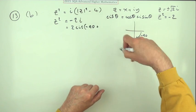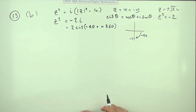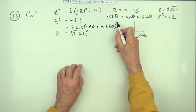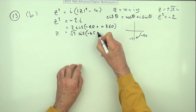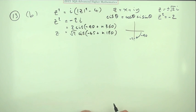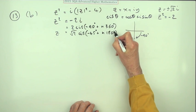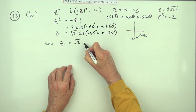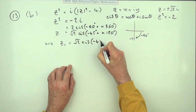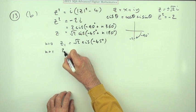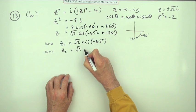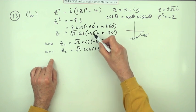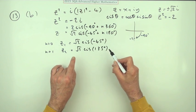To operate on it, include the general argument: cis(−90° + n×360°). Taking the square root gives root 2 times cis of (−45° + n×180°). There are only two distinct cases: for n = 0, z₁ = root 2·cis(−45°); for n = 1, z₂ = root 2·cis(−45° + 180°) = root 2·cis(135°). For n = 2 it cycles back to the first case.